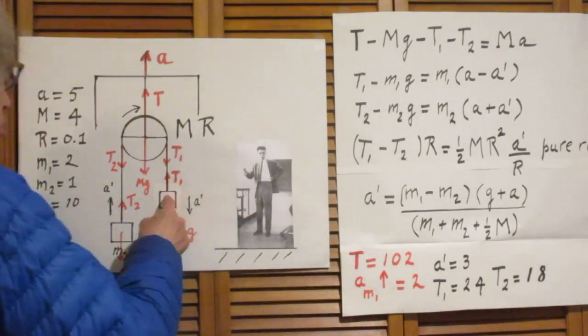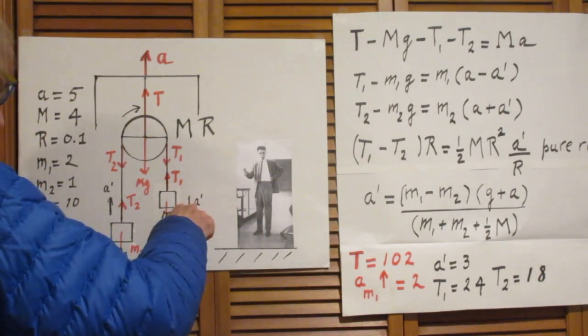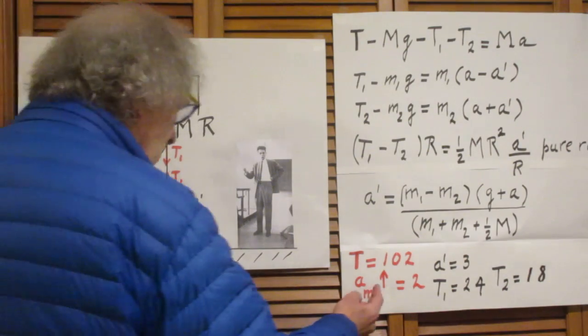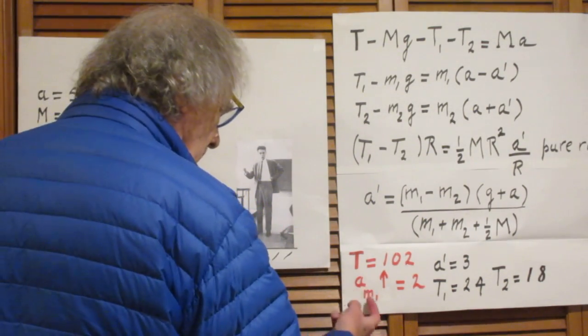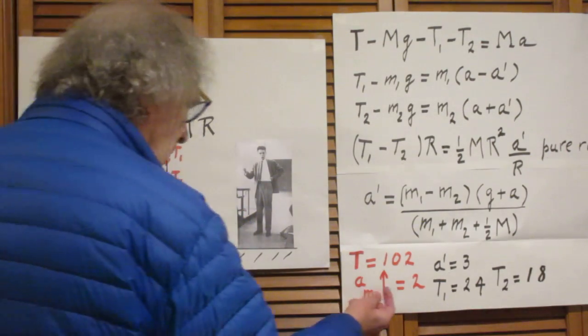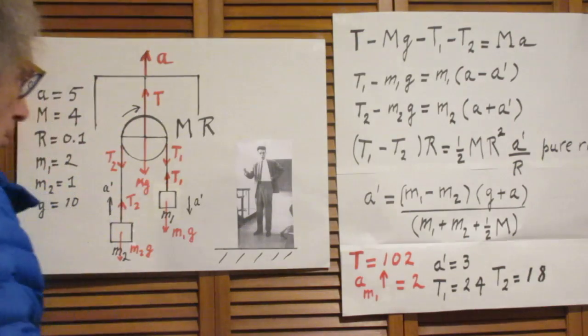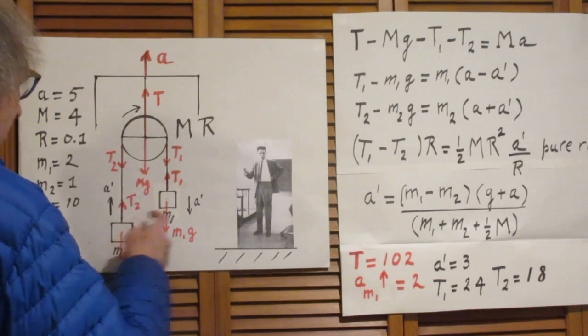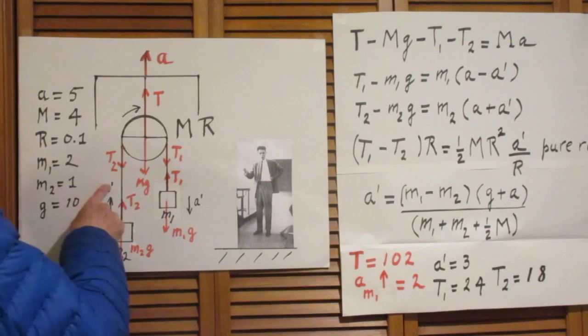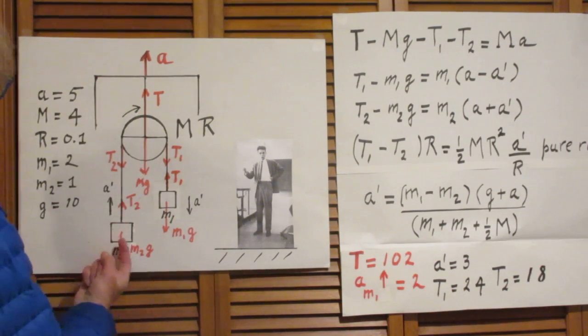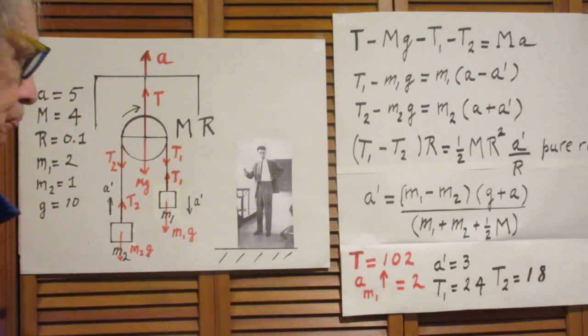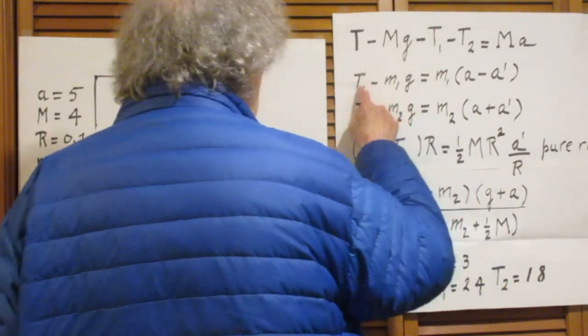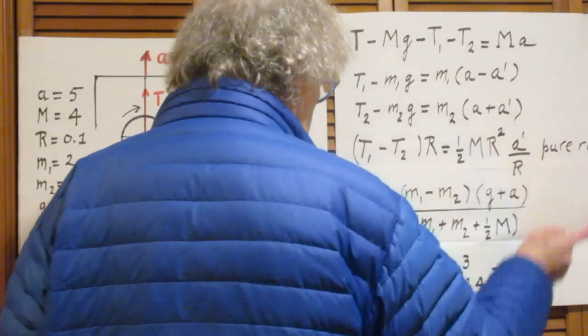So now, when Walter Lewin looks at this object, it's going down with 3 meters per second squared but up with 5 meters per second squared. So the net result is that what I will see when I stand here, the acceleration of the object m1 will be upwards with 2 meters per second squared. I didn't ask you what the acceleration was of this object when I look at it. That obviously would be 3 plus 5, would be 8 meters per second squared upwards.